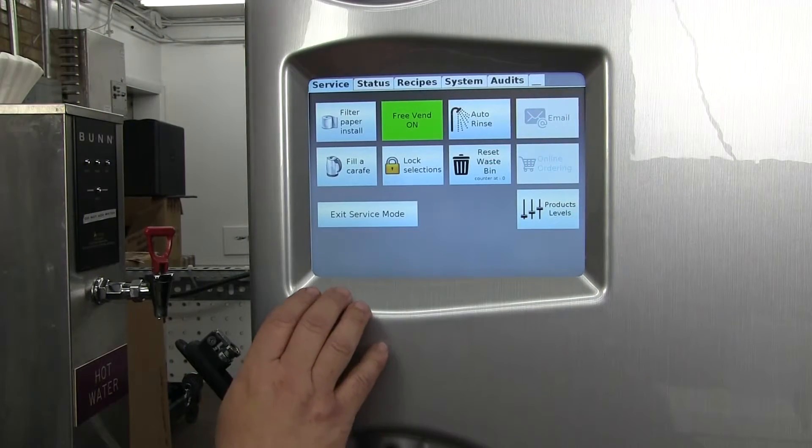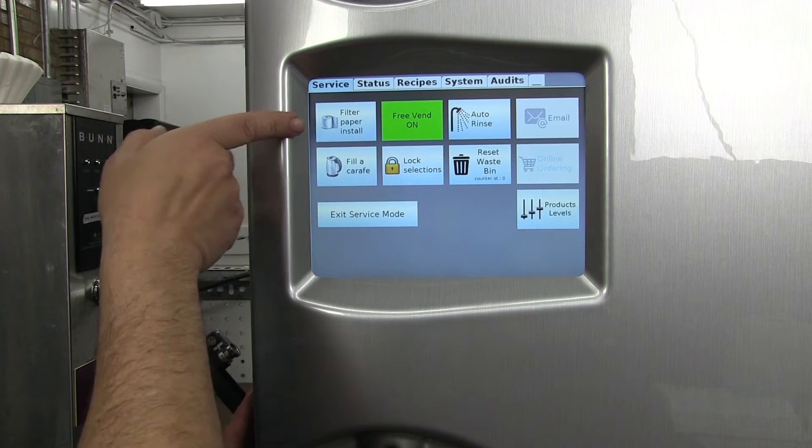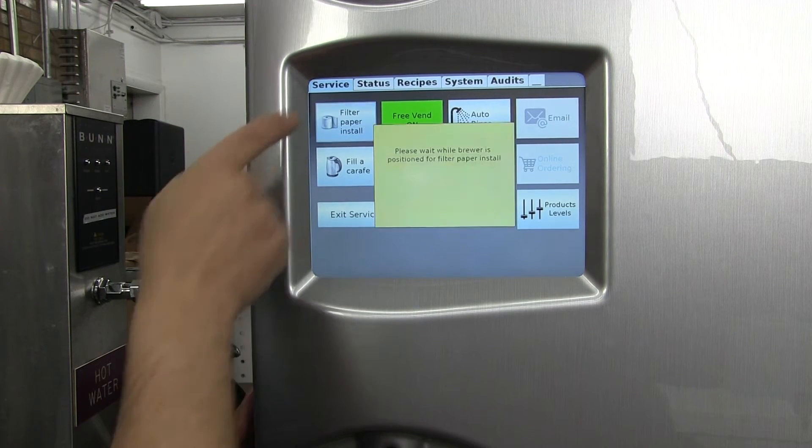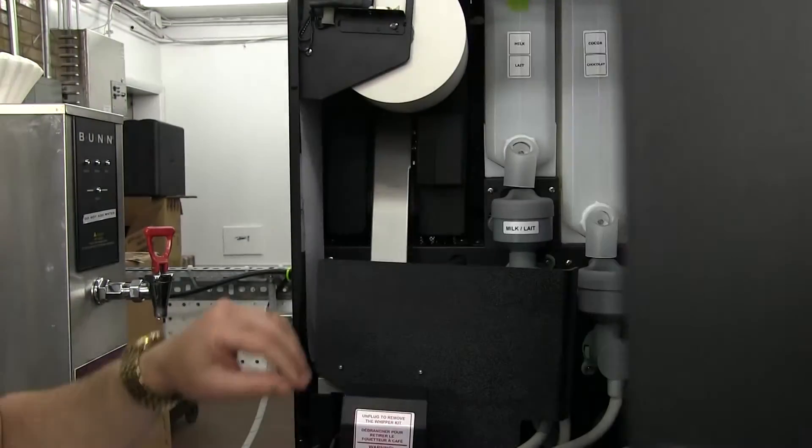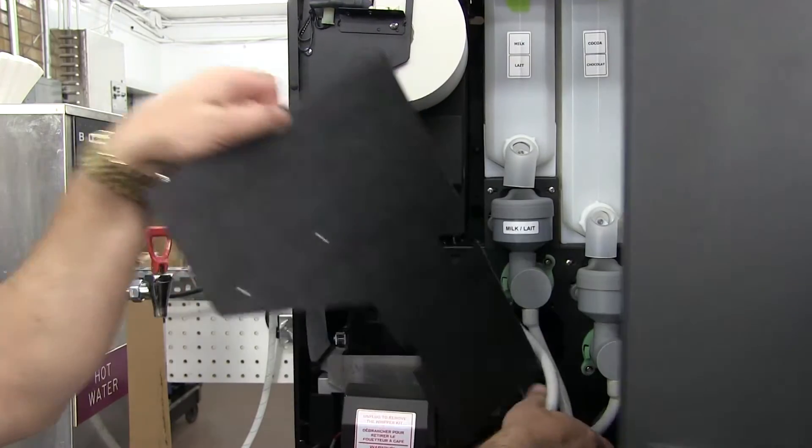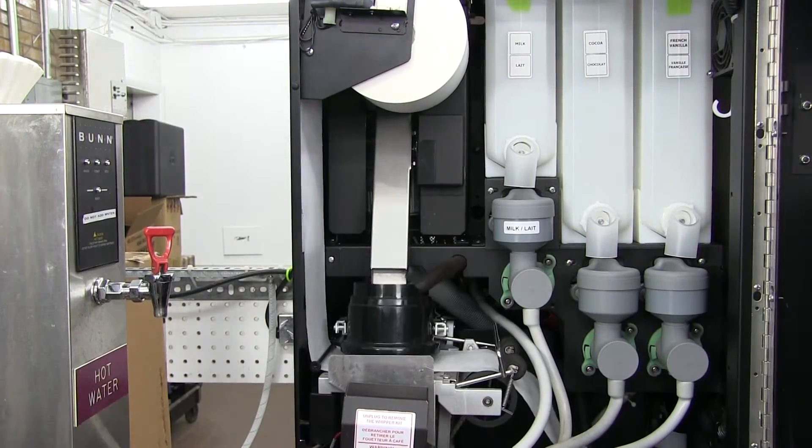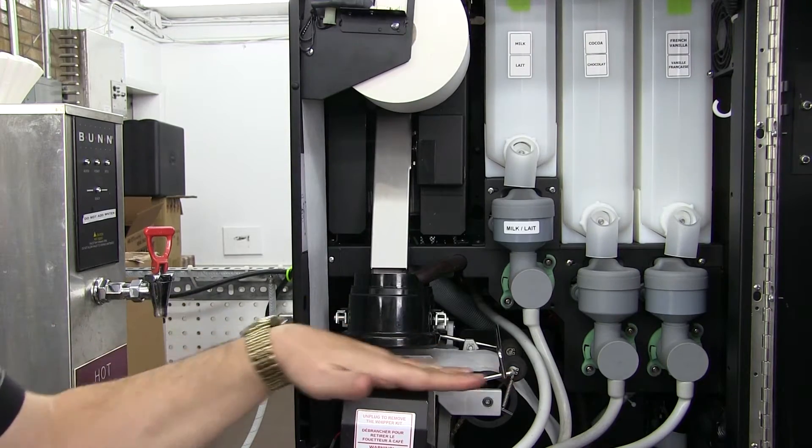Now that we've brought up the user menu we'll go up here to the filter paper install and we'll push that button. Now what the machine's doing is it's lifting the clamshell in the back behind the guard into the open position. So now we can install our new paper roll.